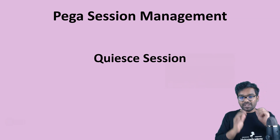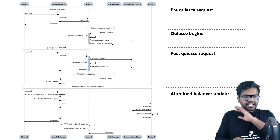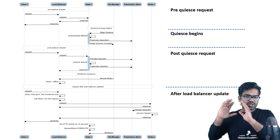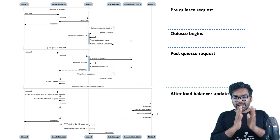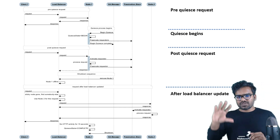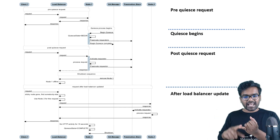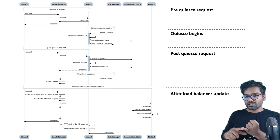Pega has a very good diagram through which you can entirely understand about quiescing. I'm going to explain this picture bit by bit. The participants in this quiescing process are: first, the client — so the client is like a browser.